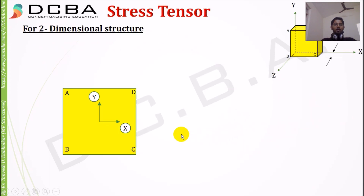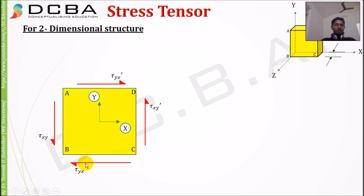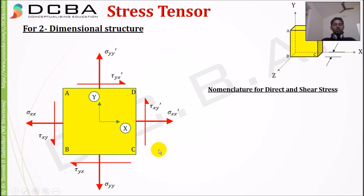Now for a two-dimensional structure I have isolated that small prism ABCD, and now we will draw the shear stresses and the direct stresses. We will also see how the nomenclature for direct and shear stresses works.